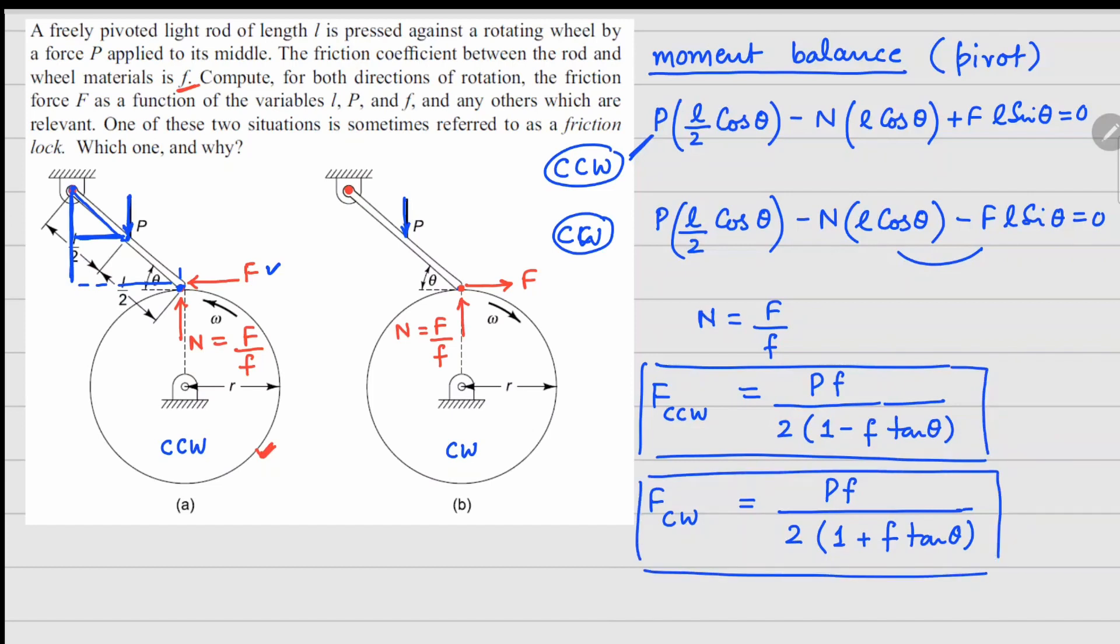Now, for the last question here, it says one of these cases is referred to as friction lock, which one and why? So, friction lock, this friction force should become really, really high. In which one of these cases do you feel friction can become really high based on the problem parameters. So, in this first term right here, because there is a negative sign in the denominator, if the denominator goes down to 0, this friction force can go really, really high. And the condition for that is when your 1 minus f tan theta becomes 0, or your theta is tan inverse of 1 over f. In that condition, your CCW case starts behaving as a friction lock, where your friction force will become infinity.